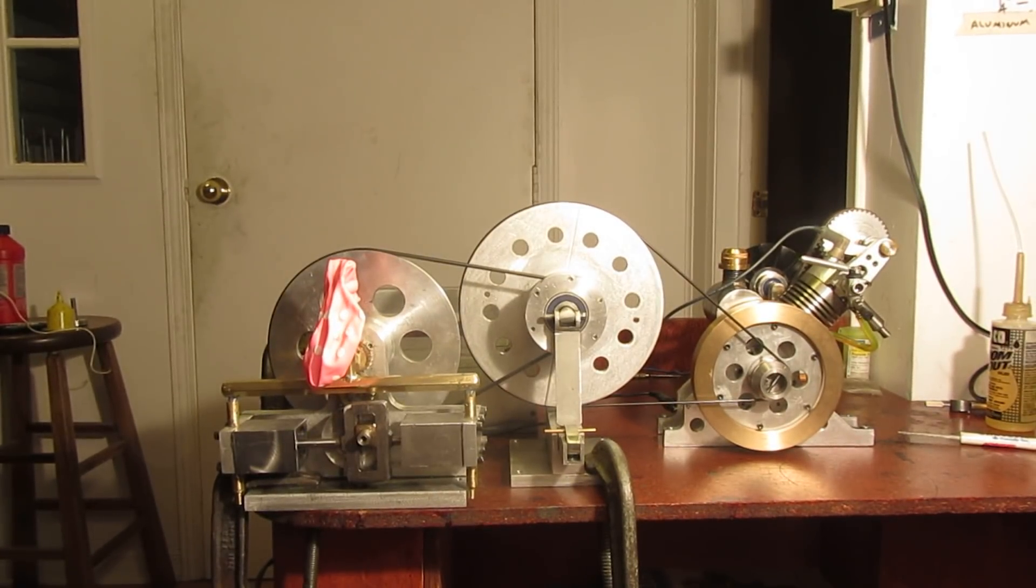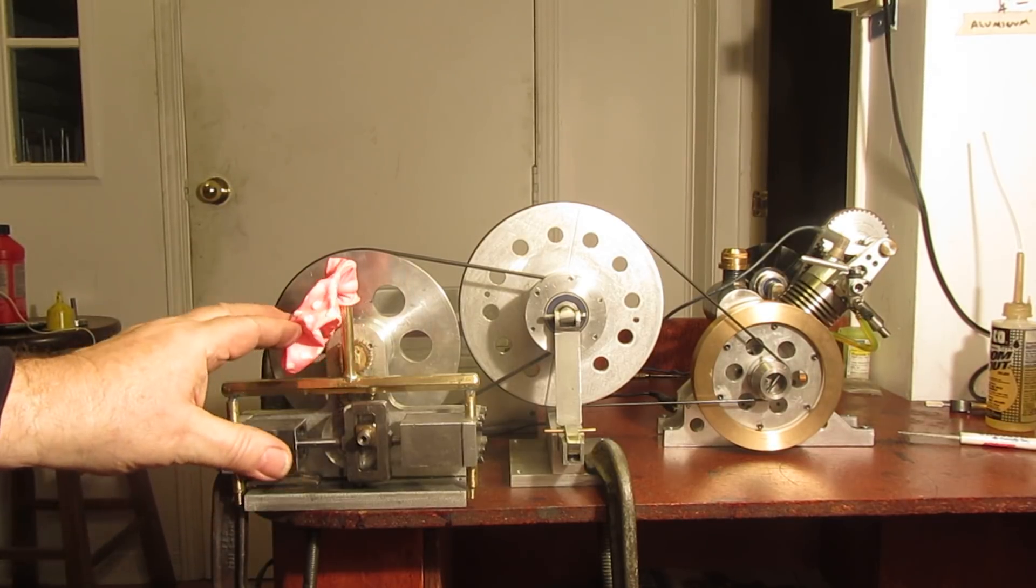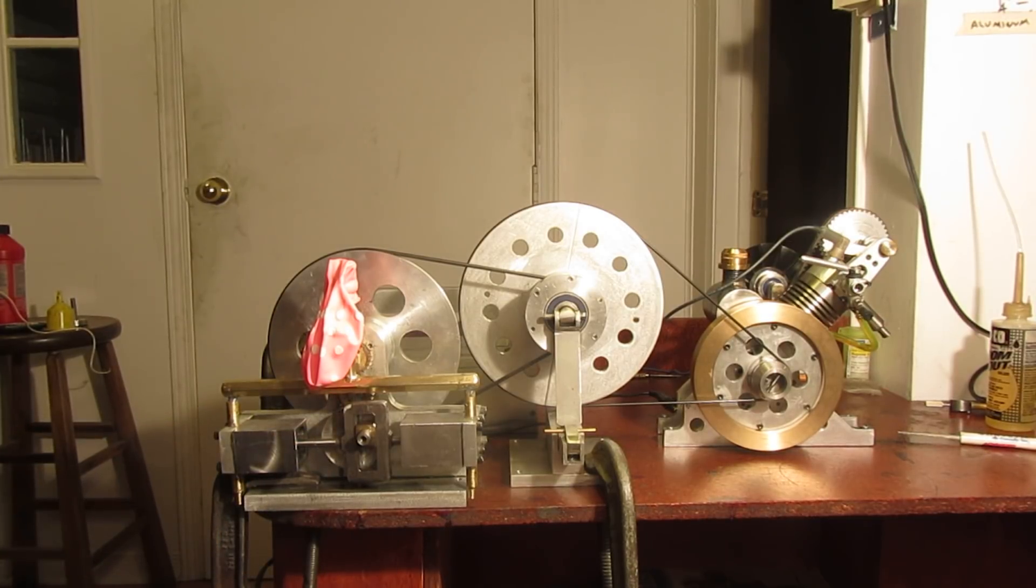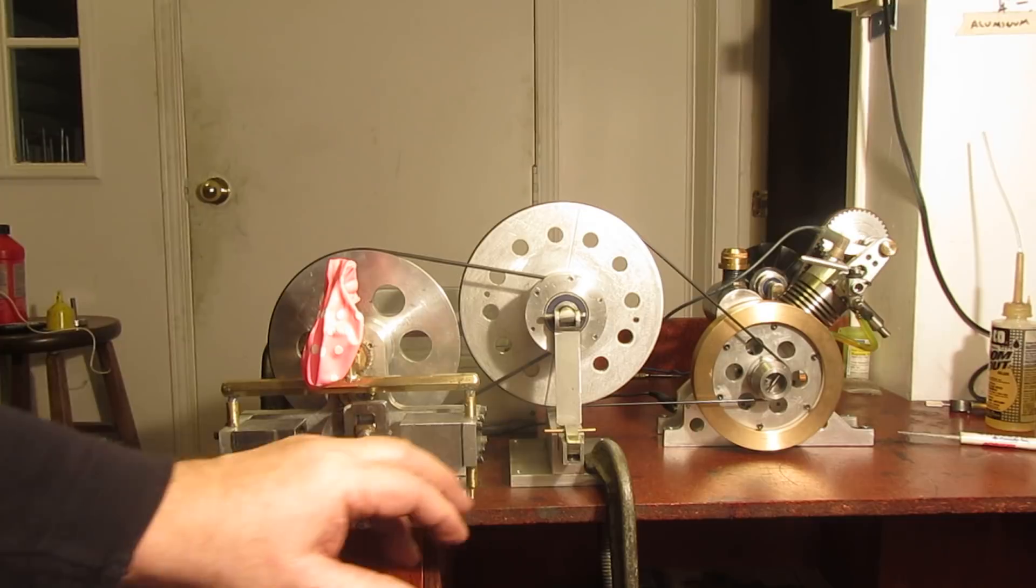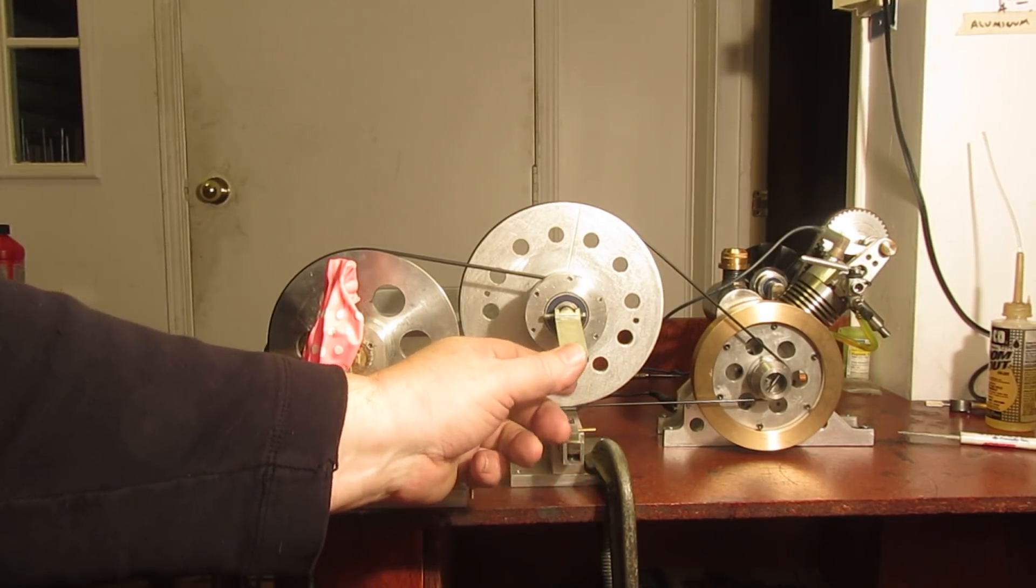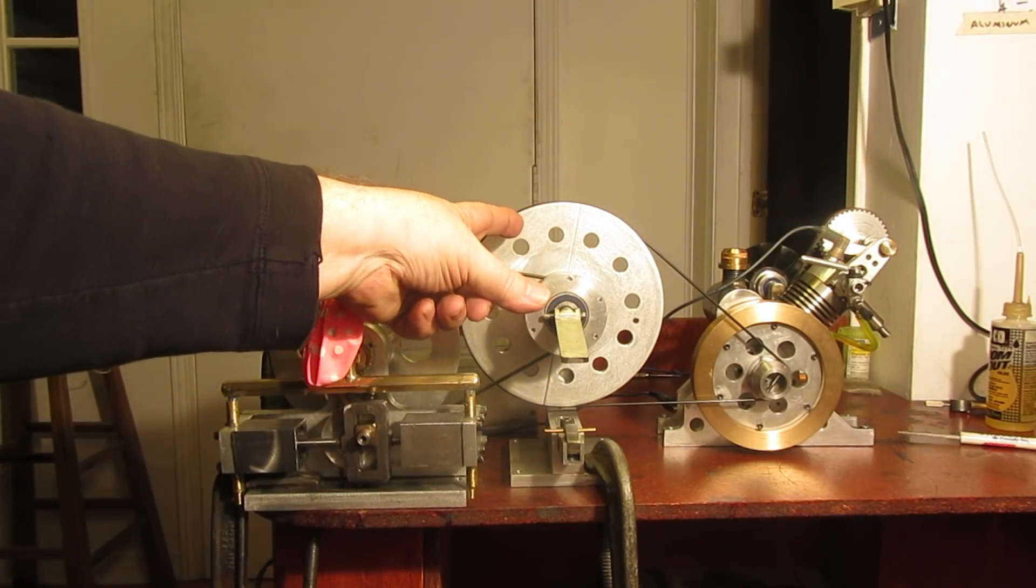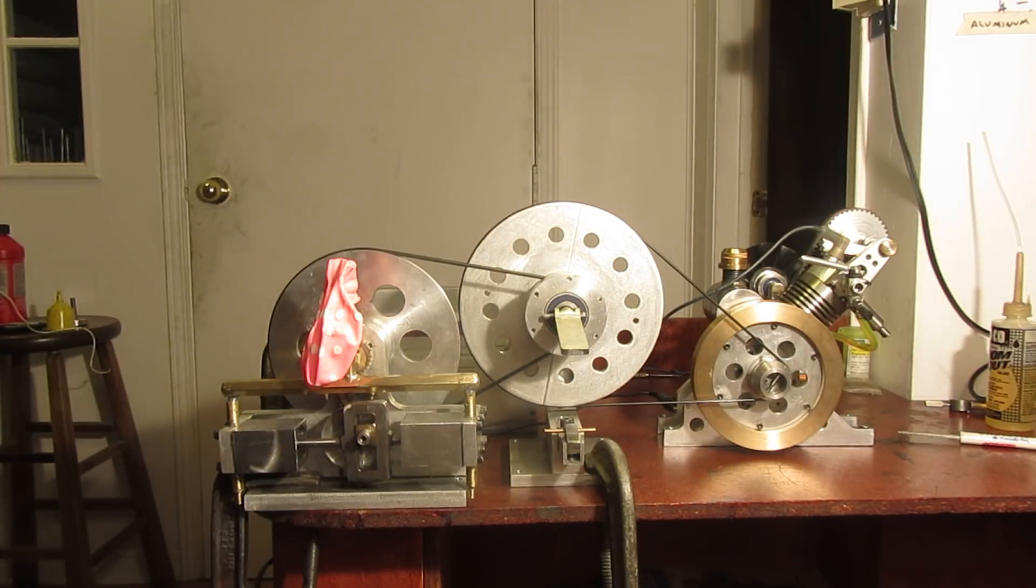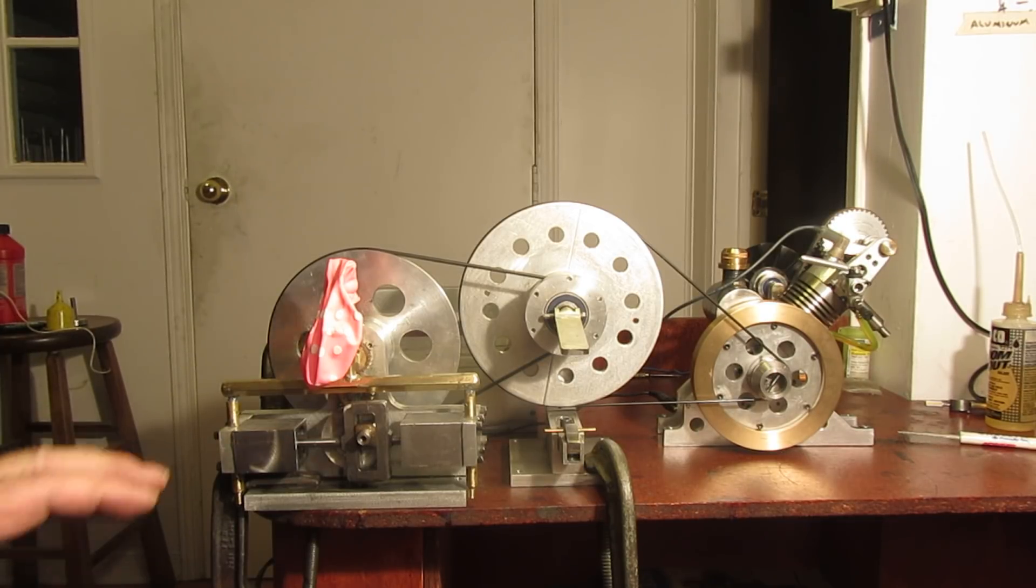We're going to have a little video here of my compressor with a scotch yoke blowing up a balloon. It's being driven through my cone clutch, which allows me to disengage the driven pulley from the drive pulley so I can start the engine under a no-load condition. I've got the engine set at a fairly fast idle right now.